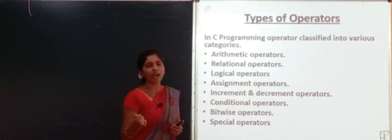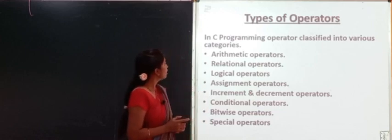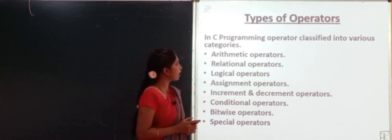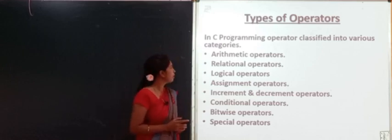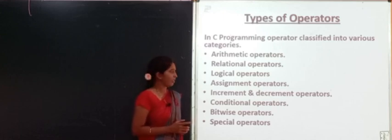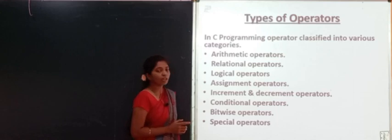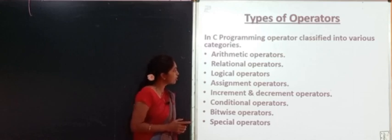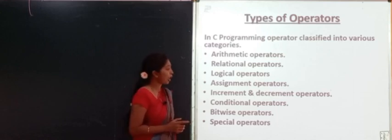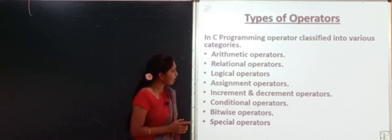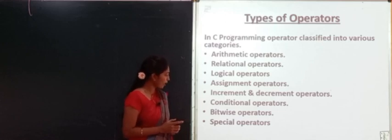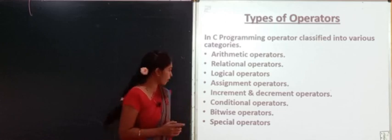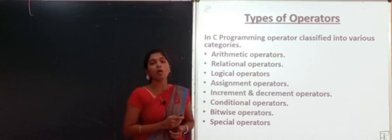In C language we have so many types of operators. In C programming, operators are classified into various categories. These are: arithmetic operators, relational operators, logical operators, assignment operators, increment and decrement operators, conditional operators, bitwise operators, and special operators. Now let us see them one by one.